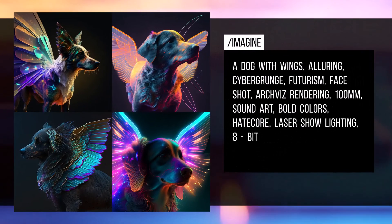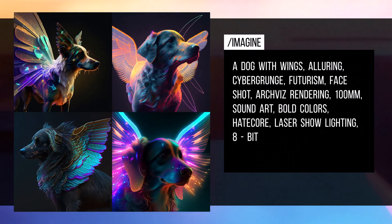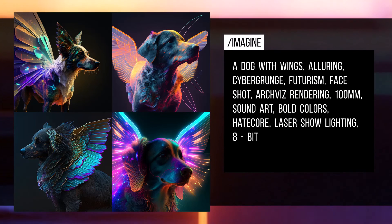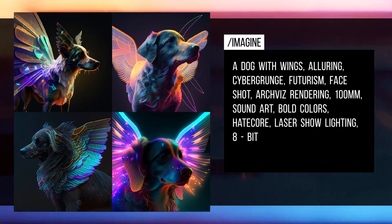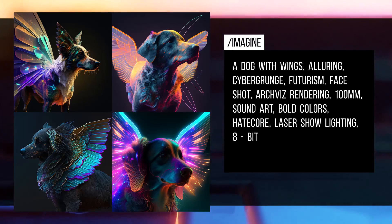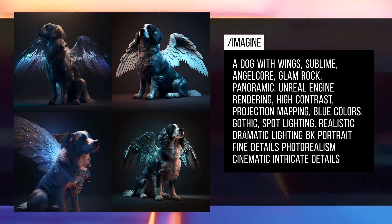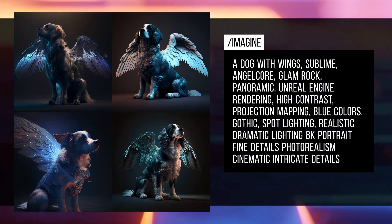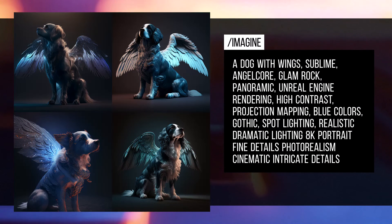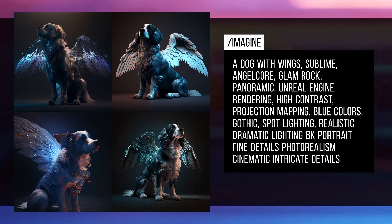Straight away I've seen some styles I haven't used before, like cyber grunge or archivist rendering. There's a pretty cool, almost neon effect with this particular image. And here we have a dog with wings in sublime angel core, glam rock, panoramic — styles I had no idea I could even use.